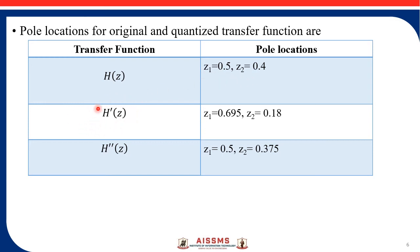The second transfer function H'(z) is the quantized transfer function for the direct form 1 realization, and the poles of this quantized transfer function are at 0.695 and 0.18. For the third transfer function, which is the quantized transfer function of the cascade realization, the poles are at 0.5 and 0.375.